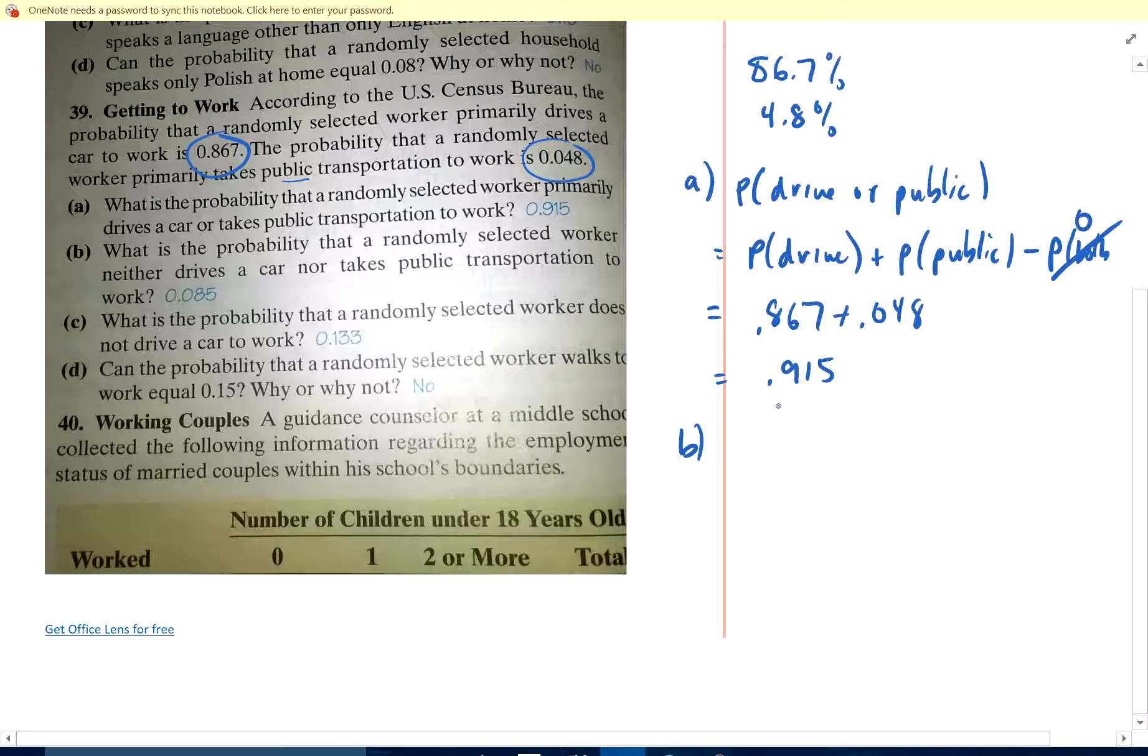Okay, part B. The probability that they don't drive nor take public transportation. So they're not going to do either one. Well, this is one or the other or both. So the probability that they do neither is going to be 1 minus 0.915, which is 0.085 or 8.5%. Does that make sense? Because if you're not doing either, that's the complement of this guy. This is one or the other or both. Well, it's one or the other because you can't do both. And doing neither one is the complement of that.